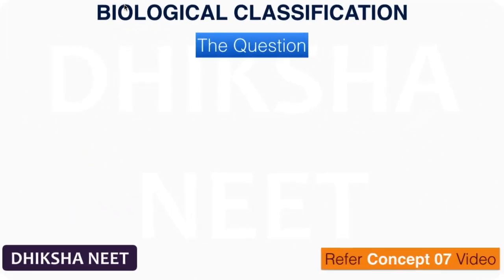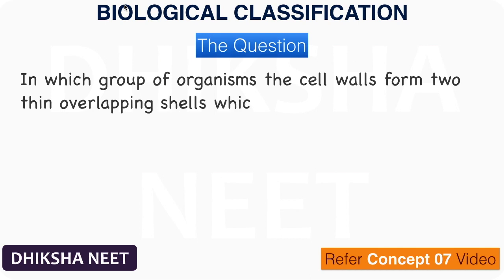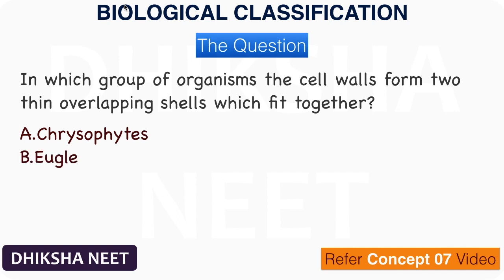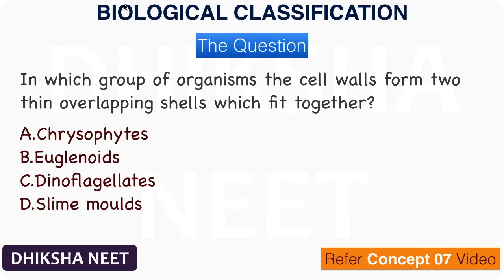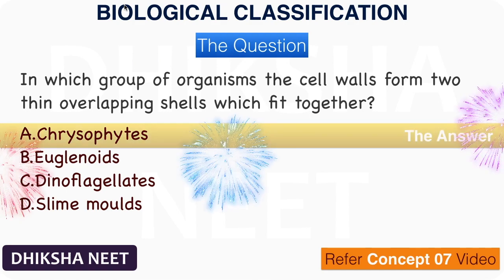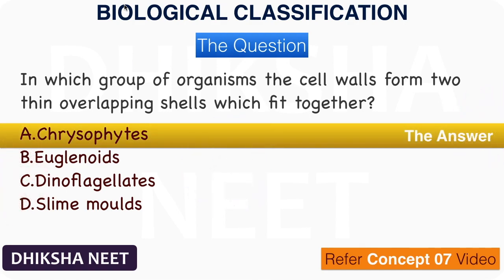The question: In which group of organisms do the cell walls form two thin overlapping shells which fit together? A. Chrysophytes, B. Euglenoids, C. Dinoflagellates, D. Slime molds. The answer is option A. Chrysophytes.